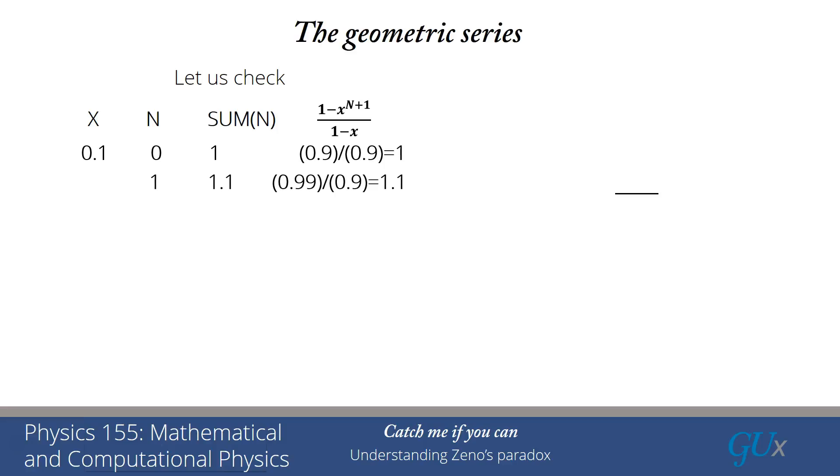If I look at n equals 1, the sum should equal 1.1, and now let's look at our formula. x is 0.1 and n is 1, so I have to evaluate x squared, which is 0.01. I get 0.99 in the numerator and I get a 0.9 in the denominator, and indeed I get 1.1 when I look at that ratio. And similarly, when I look at the case n equals 2, the sum is now equal to 1.11, and I can go through the algebra and find that indeed this formula continues to work. And so it looks like this formula is working completely fine for all these different cases.